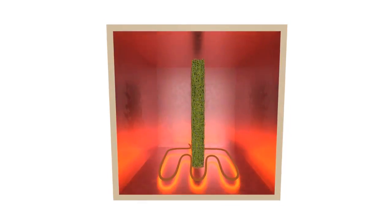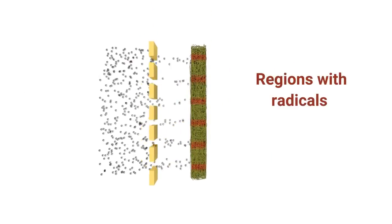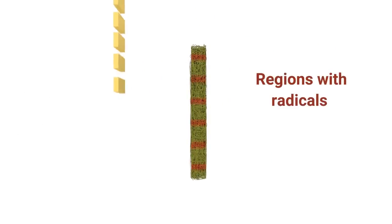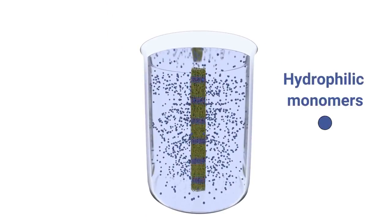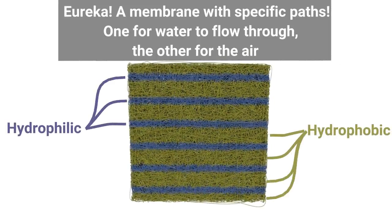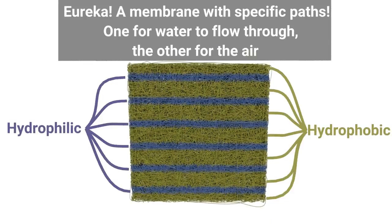The material is then exposed to an electron beam using masks with a predefined pattern. Radicals are created in the exposed regions. Later, the material is immersed in a hydrophilic monomer solution at moderate temperature to initiate the grafting reaction. This generates hydrophilic surfaces in the irradiated regions.